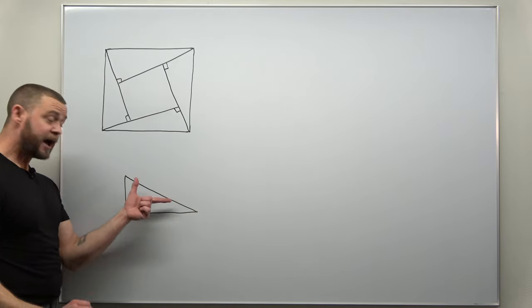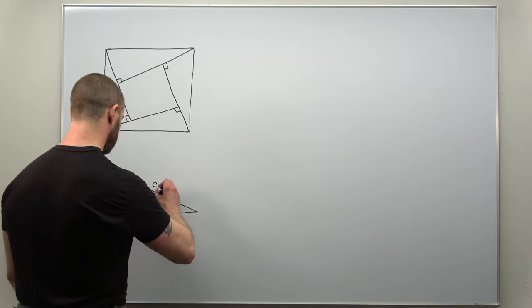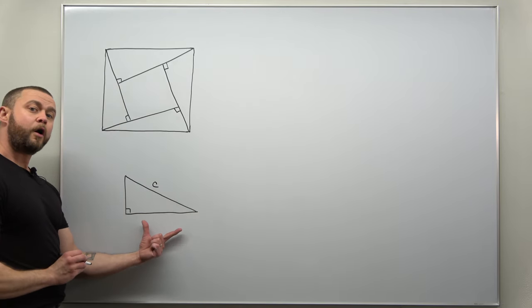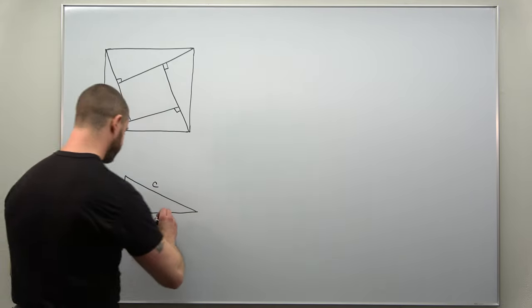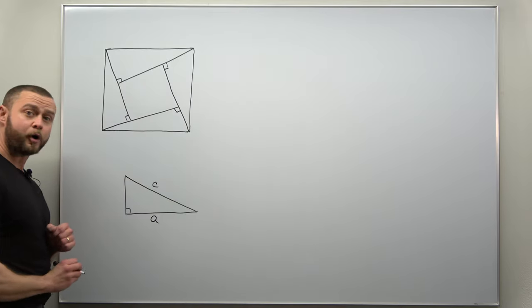All right, we're going to call the hypotenuse of that C. We're going to call the base length here A, and we'll call the height B.